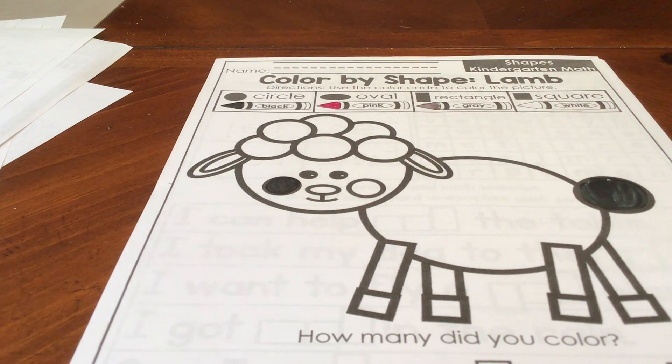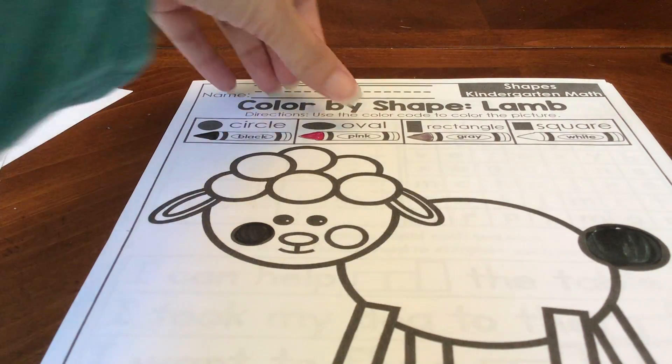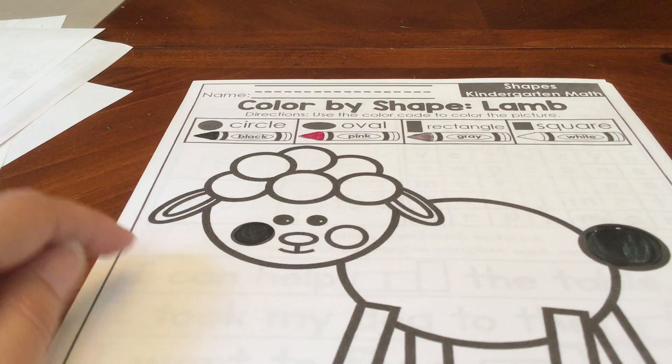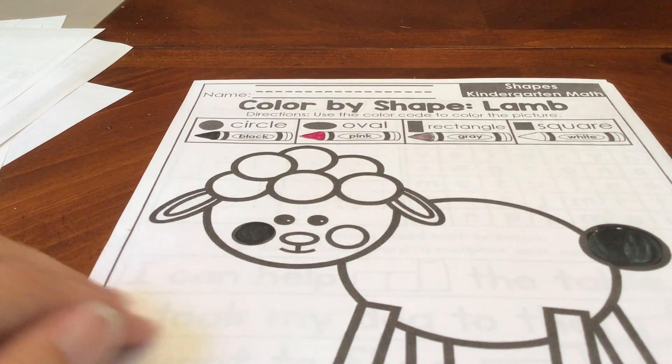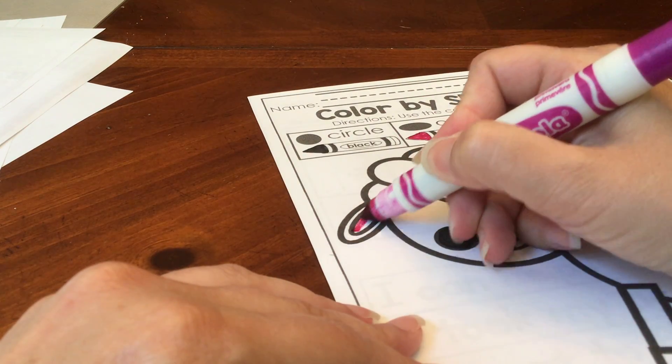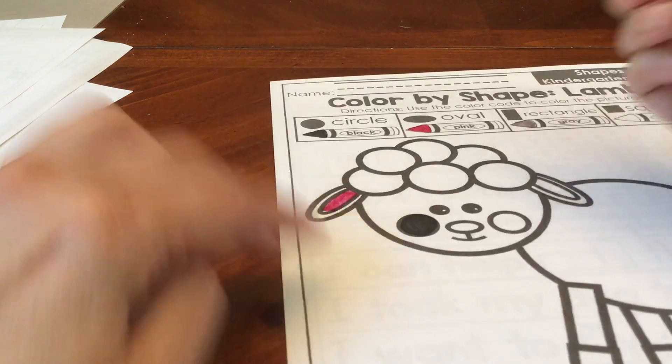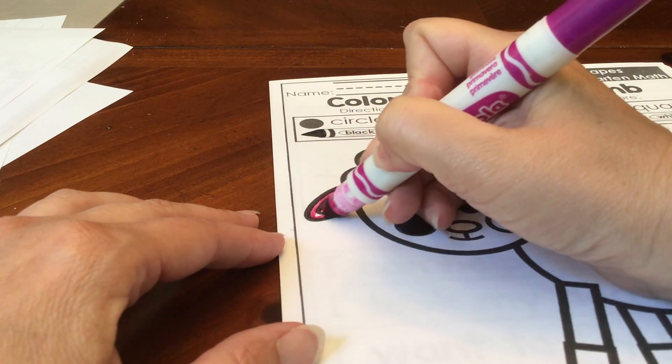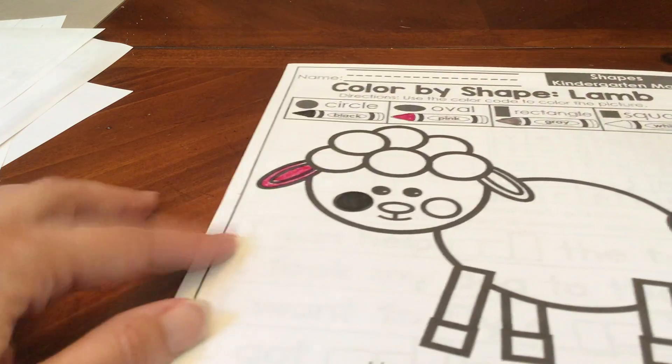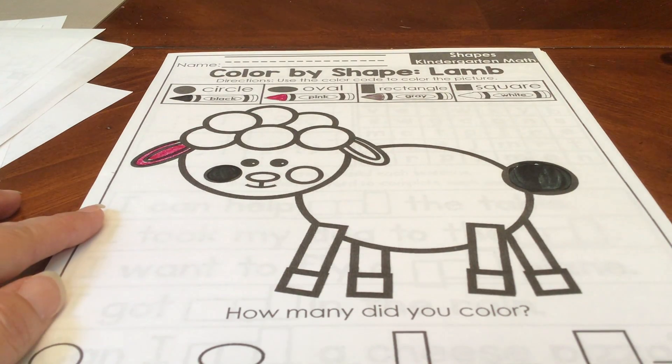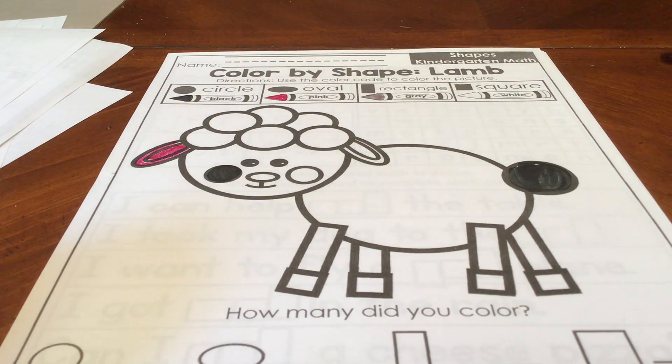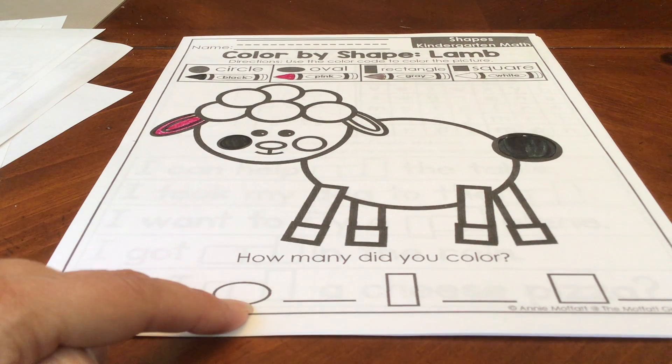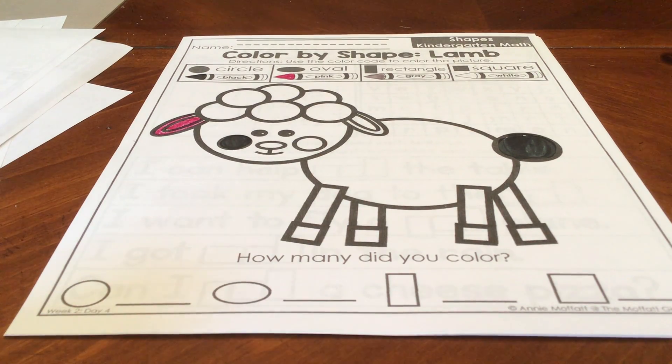Now I'm going to find my ovals and I'm going to color them pink. Here is an oval. There's actually another oval around it. Okay, and you're going to find all the other ovals in the page. Count how many there are and write that number on the line.